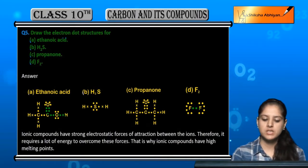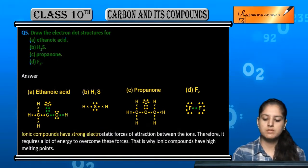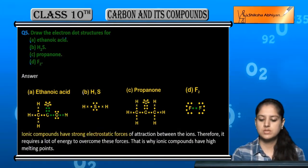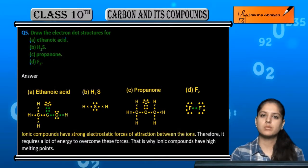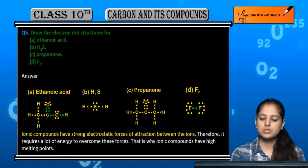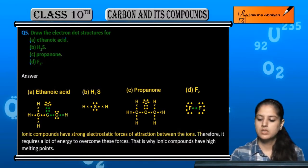So these are the electron dot structures of the compounds. Ionic compounds have strong electrostatic forces of attraction between the ions. Therefore,